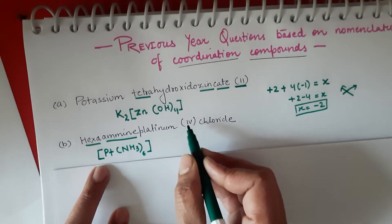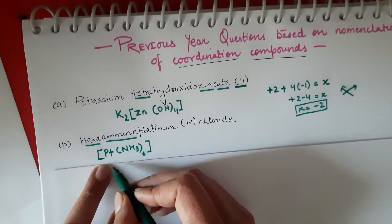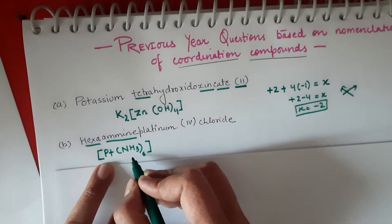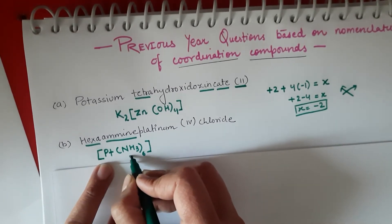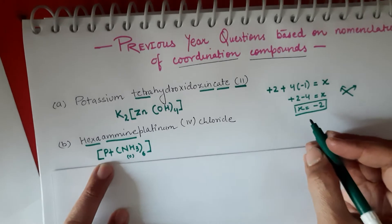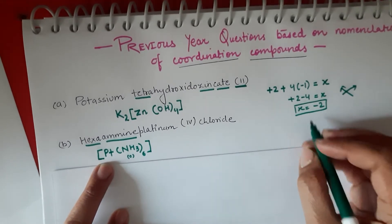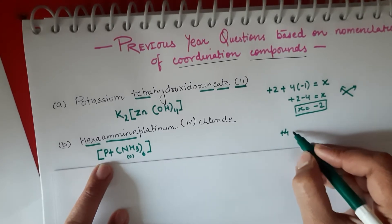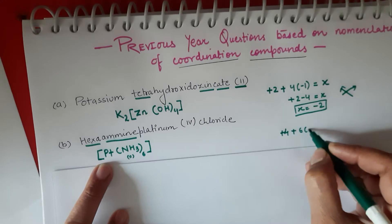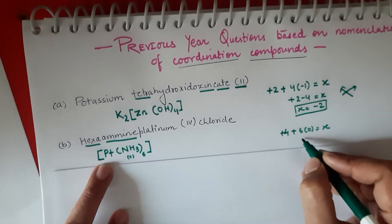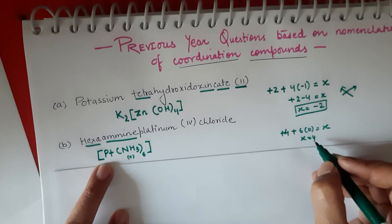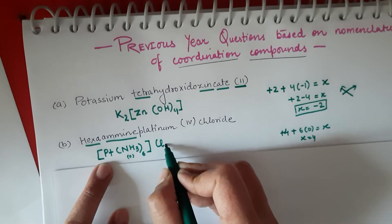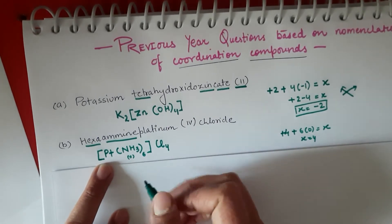The Roman numeral representation shows the oxidation number of the central metal atom, and it's given here as 4. Ammonia is a neutral ligand, so the charge calculation is: platinum +4 plus 6×0 = x, so x = +4. Therefore chloride count will be 4. The formula is [Pt(NH₃)₆]Cl₄.